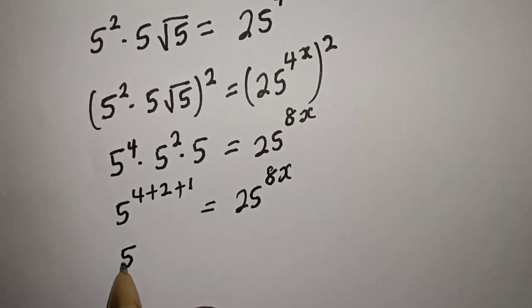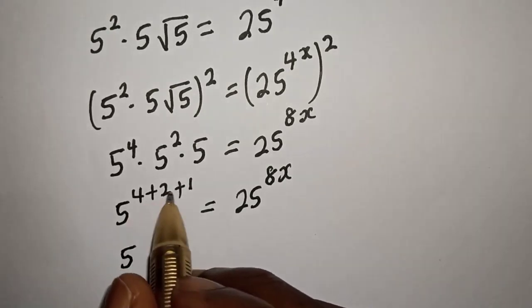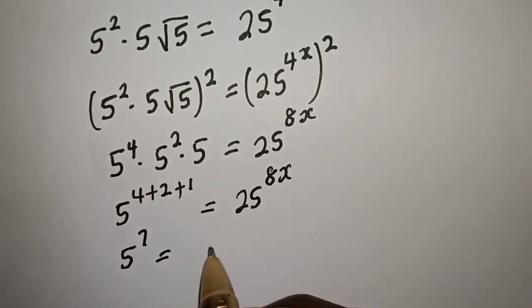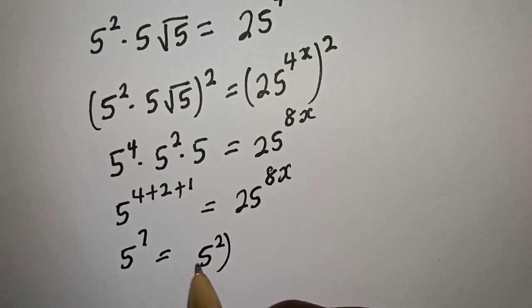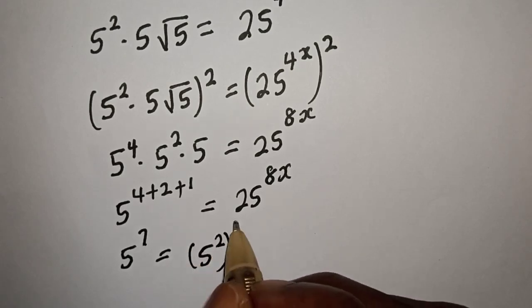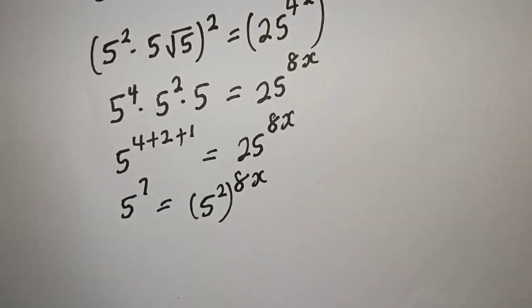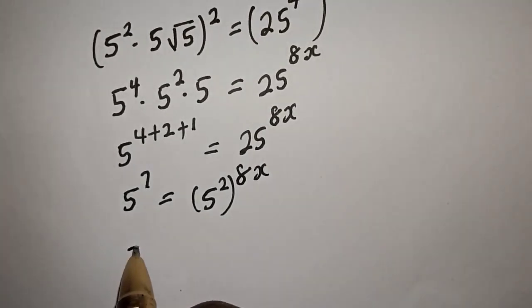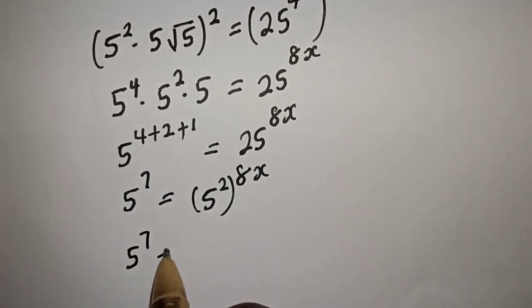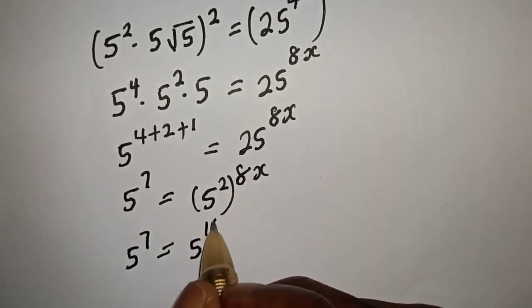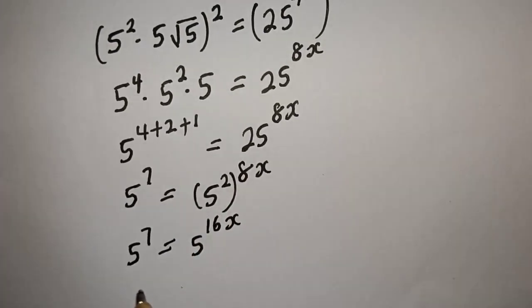Here, 5 raised to the power 4 plus 2 plus 1 — that is 7 — is equal to 5 squared raised to the power 8x. And we have 5 raised to the power 7 is equal to 5 raised to the power 8 times 2 — that is 16x.